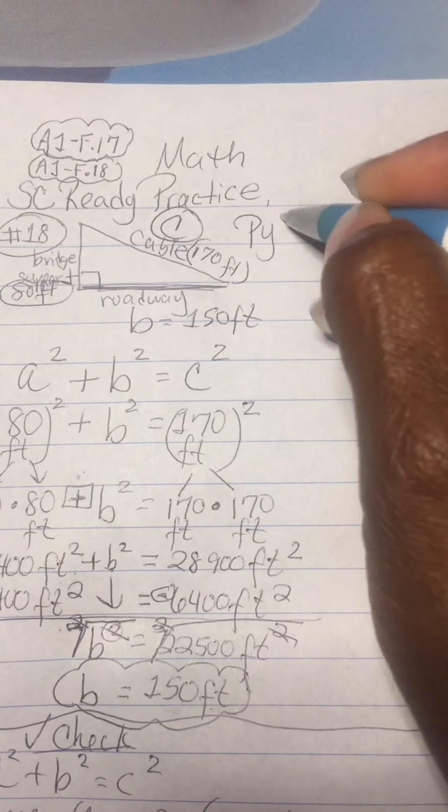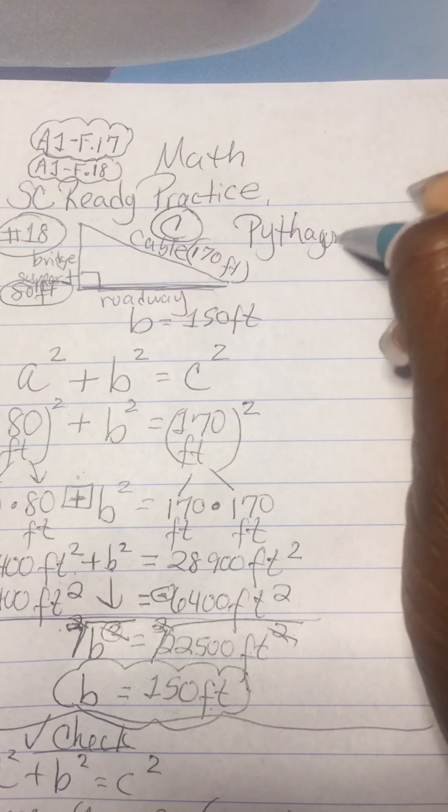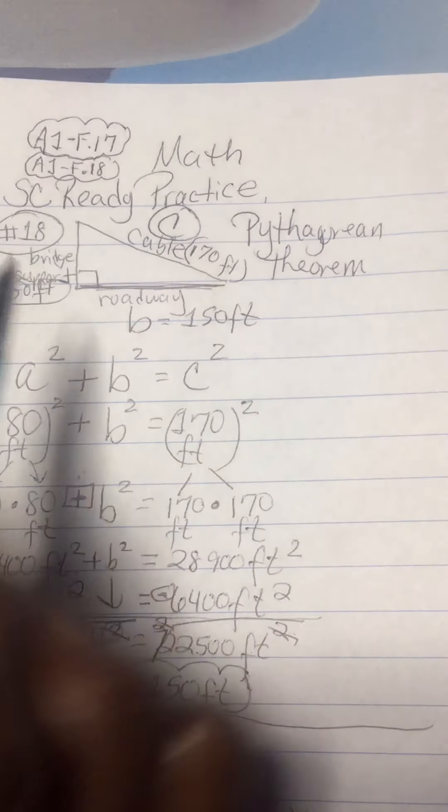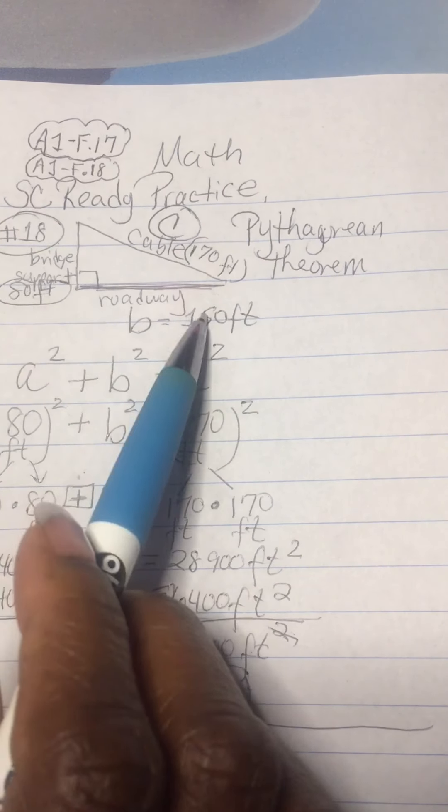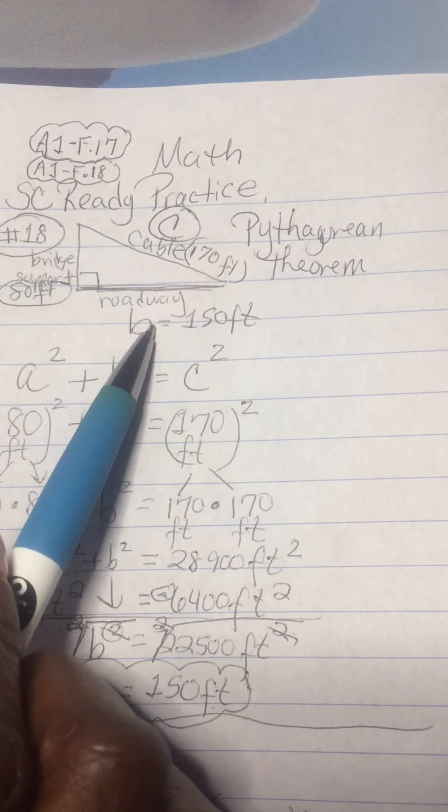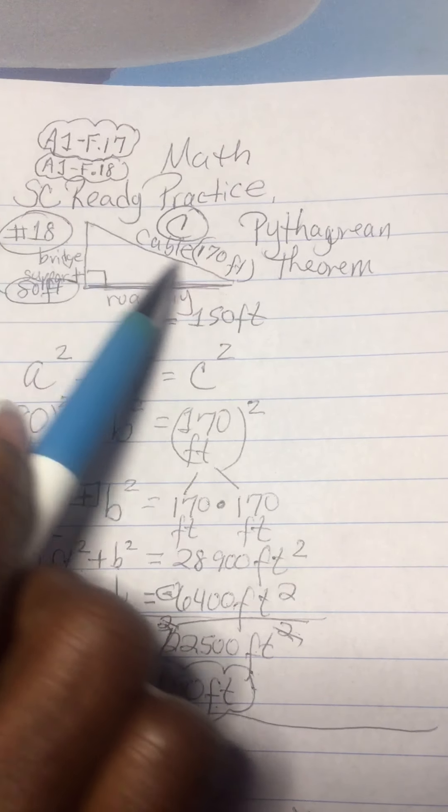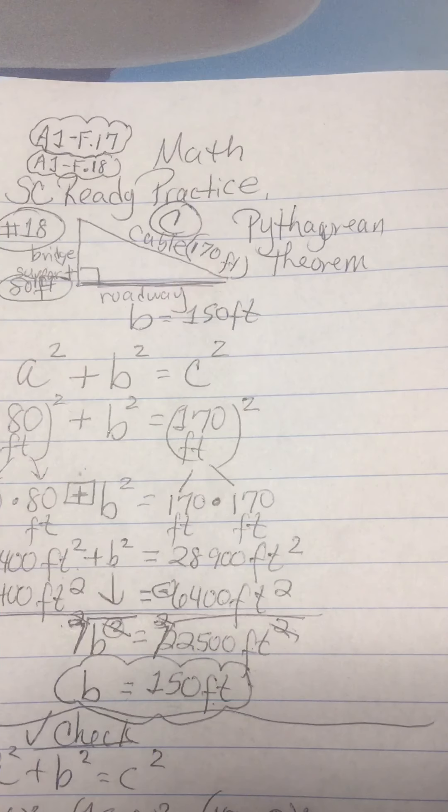This is called the Pythagorean theorem. It is a fancy word that just means anytime you see a right triangle, just make sure you do A squared plus B squared is equal to C squared. And make sure that the diagonal is always C.